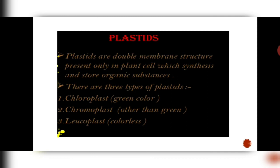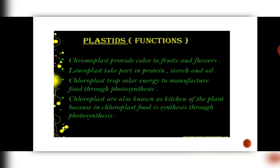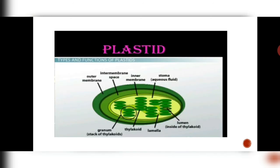Next we have plastids. Plastids are double membrane structures which are only present in plant cells and absent in animal cells. Plastids are of three types: if they are green in color, then they are called chloroplast. If they are colorless, they perform a storage function and are called leucoplast. Leucoplast helps in the synthesis of food. This is the diagram of a chloroplast.